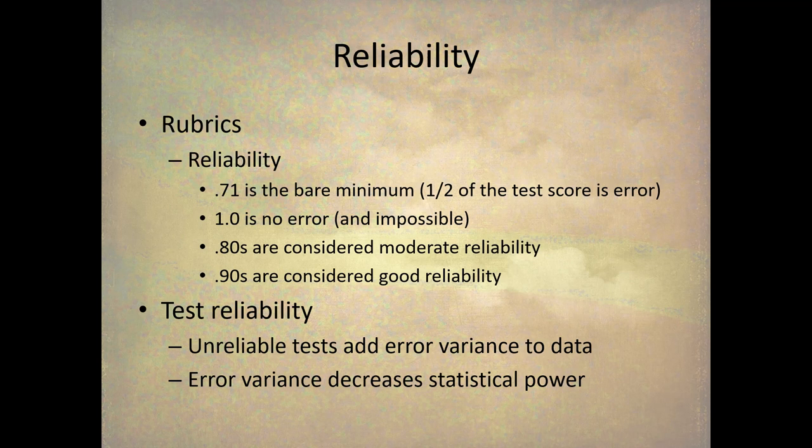Regardless of the method, we can use the same set of rubrics to assess the reliability of reliability data. 0.71, a reliability of 0.71, is the bare minimum of reliability. What this means is half the test score is error, and the other half is measuring the trait. And I'll get to that in a minute or so. One is no error, you're just measuring the trait itself. That's pretty much impossible. 0.8 to 0.9, those are considered moderate liabilities. The 90s are considered good. And so these are the rubrics you can use to assess reliability from any of these methods. And a truck's going by, so there it goes. And remember, unreliable tests add error variance to the data. And error variance decreases the statistical power of statistical tests you're using to test your hypotheses.